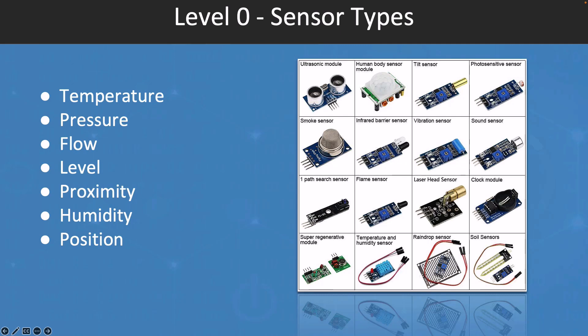We also have the pressure sensors, which are used to measure the pressure of a gas or liquid within a system. They can use technologies such as strain gauges, piezoelectric sensors, or capacitive sensors. We have the flow sensors, which are used to measure the flow rate of a fluid within a system. They can use technologies such as electromagnetic, ultrasonic, or thermal sensors.